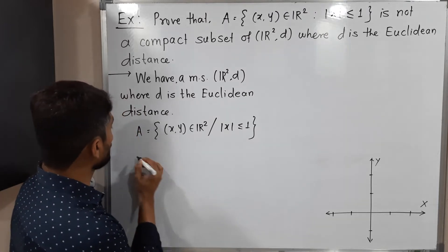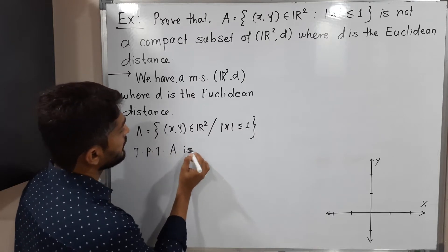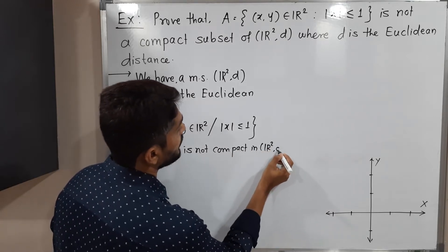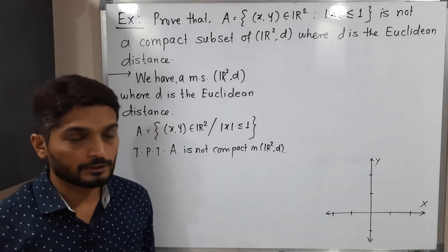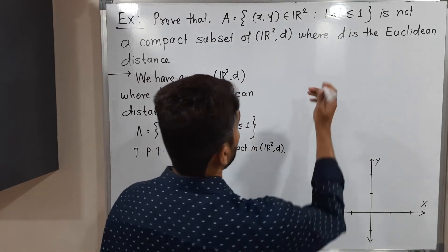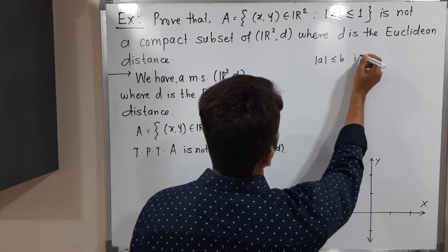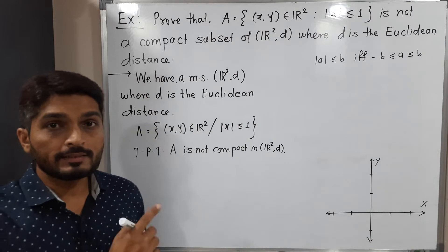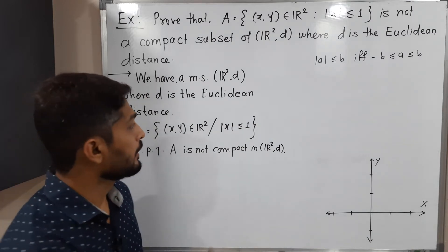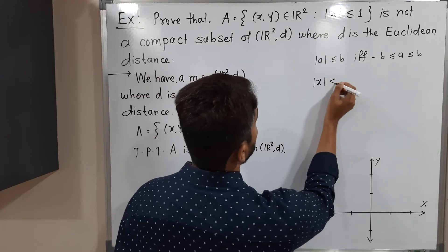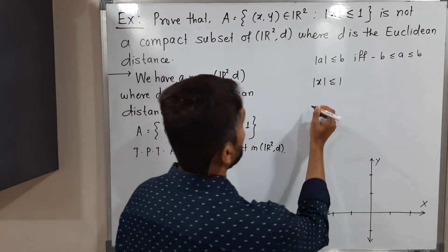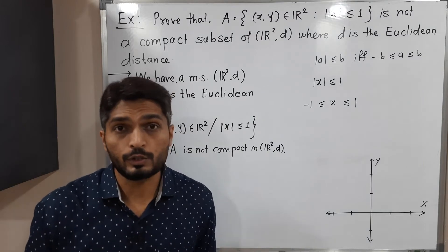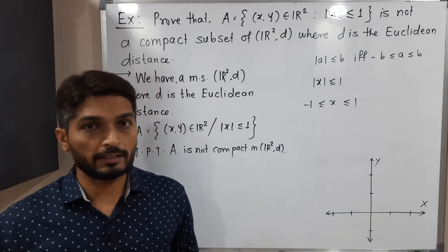We need to prove that A is not compact in ℝ²(d). Let us first find the given set. We use the result: |a| ≤ b if and only if -b ≤ a ≤ b. Applying this to our condition |x| ≤ 1, we get -1 ≤ x ≤ 1.